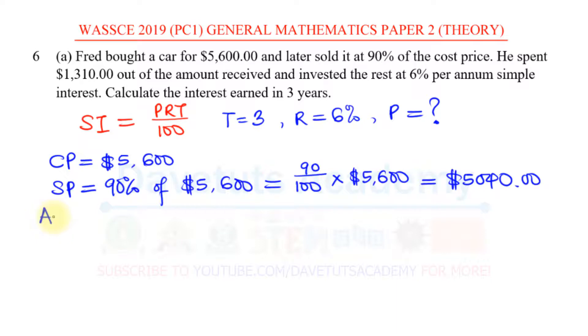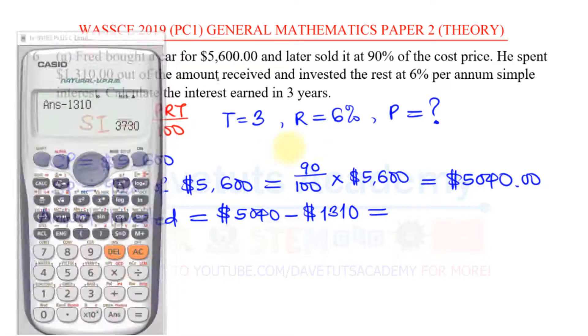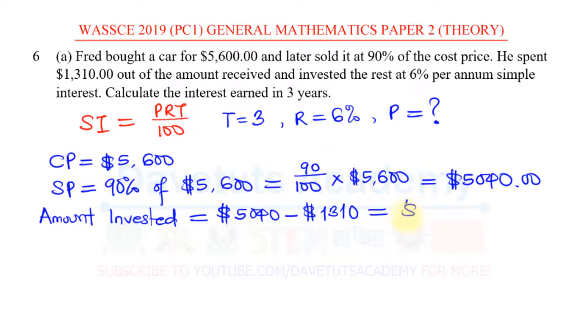We should be able to now know the amount that he is able to invest. The amount invested, which is the capital, is going to be this selling price that we just got minus the amount that he spent initially, which is $1,310. That is $3,730.